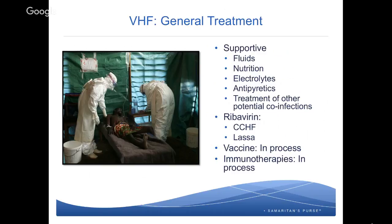Regarding immunotherapies — if you've heard about Dr. Kent Brantley's case, the Samaritan's Purse doctor who got Ebola in 2014, the staff on the ground actually gave him ZMapp, which was an experimental drug at the time and still is. ZMapp is a collection of antibodies designed to increase the chances of patient survival for those who have Ebola. It was given to Dr. Brantley as well as Nancy Writebol. Those I've talked to who administered it say they're convinced it was the turning point in their disease process. However, studies are still ongoing to solidify whether this therapy can be regularly used for Ebola or other viral hemorrhagic fevers.